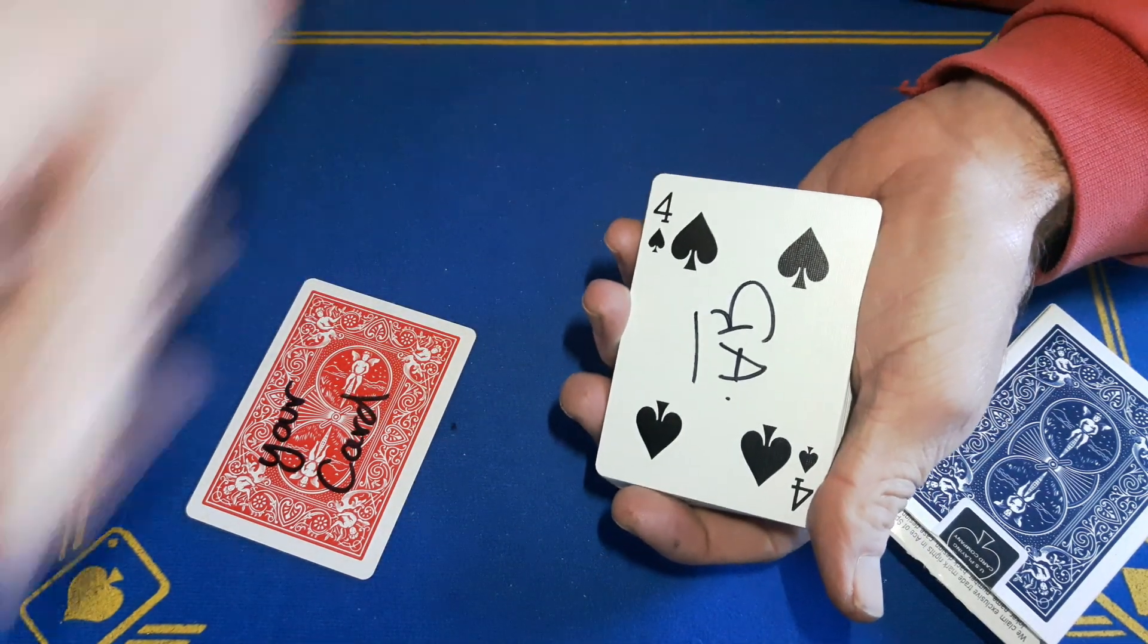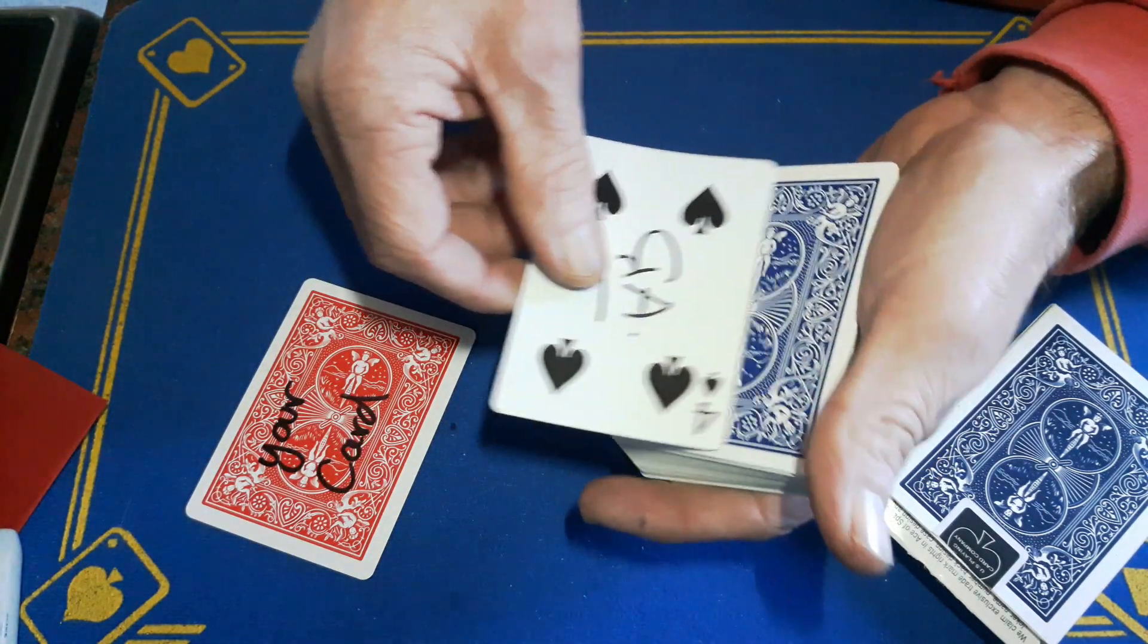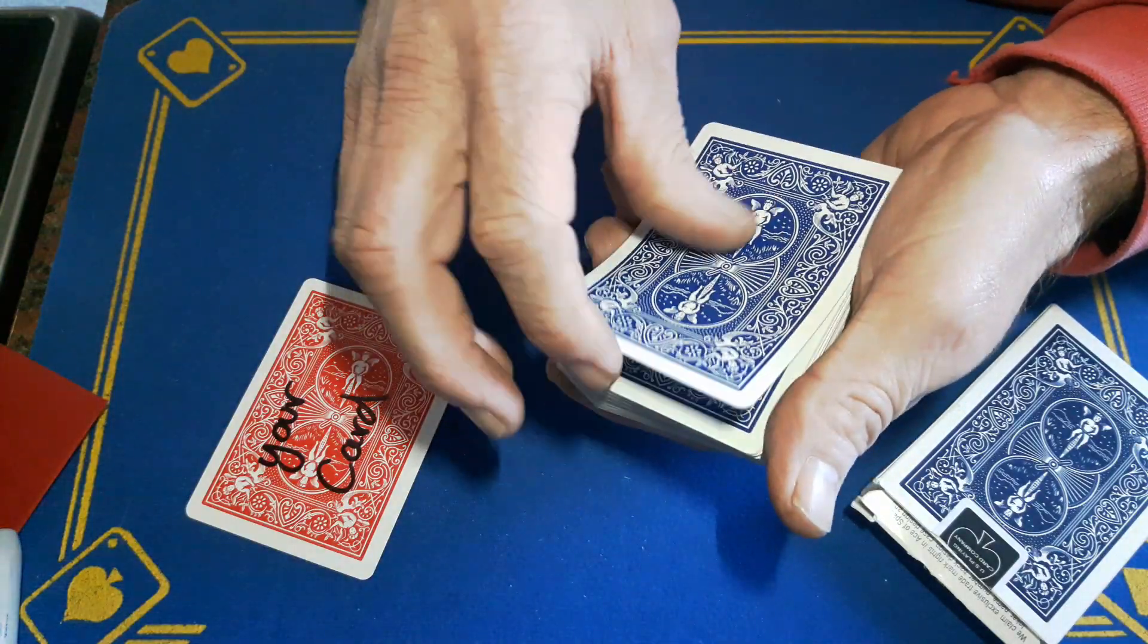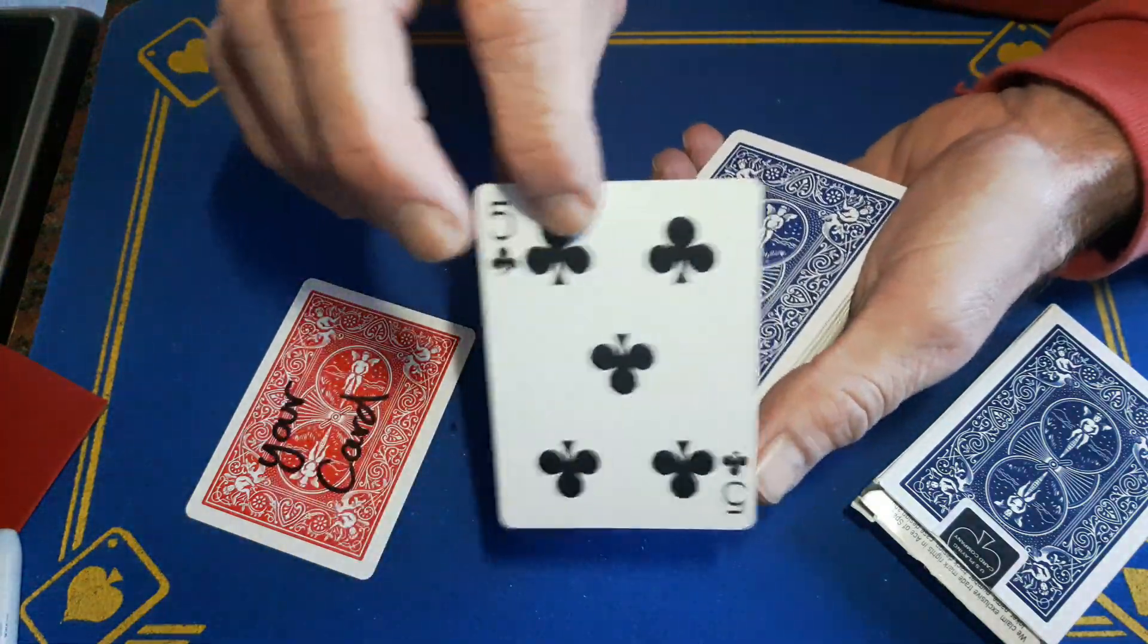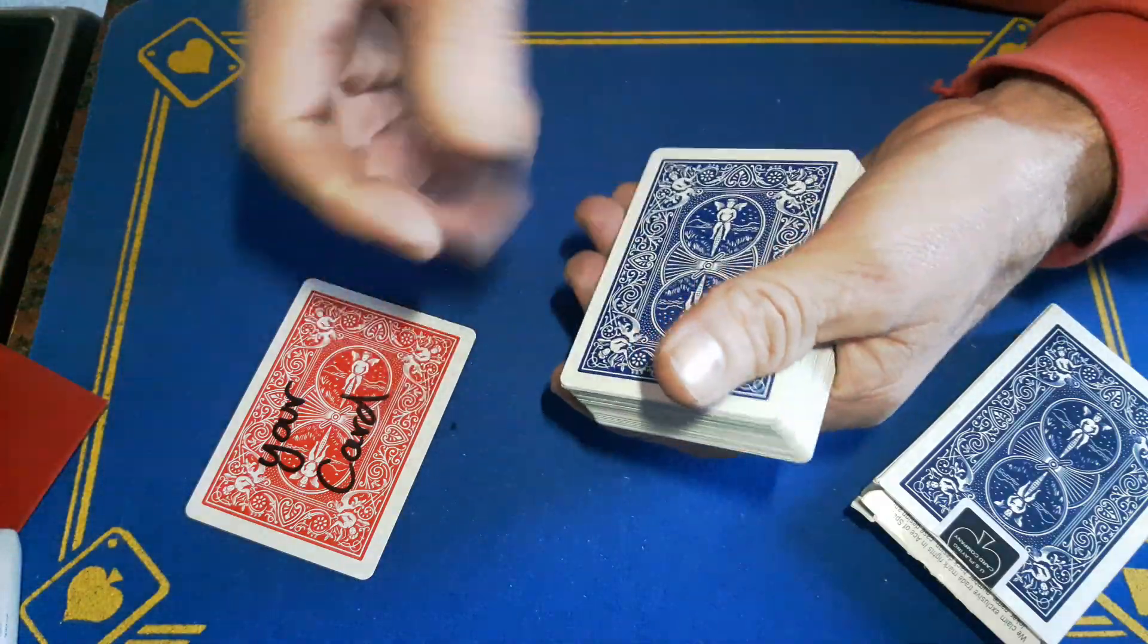So you're going to show them the four of spades. You'll get them to sign the four of spades. You need to hold the deck and you're going to turn this triple over again. Take what they think is their signed card, this is just a completely indifferent card, and place it somewhere in the middle of the pack.